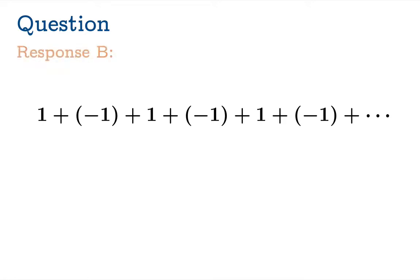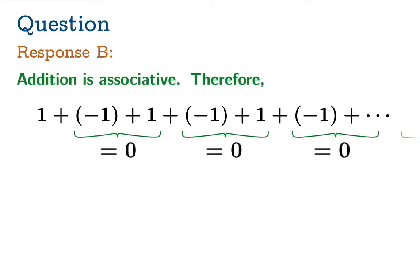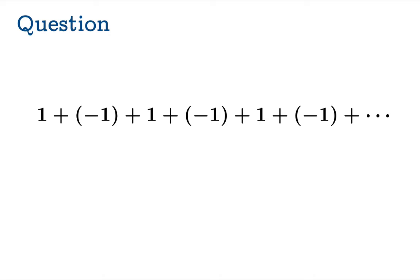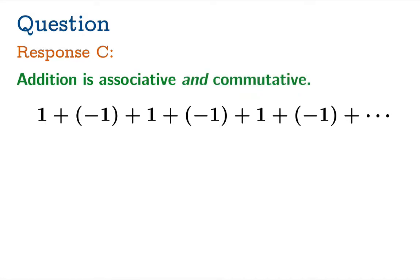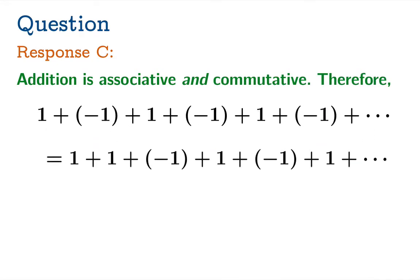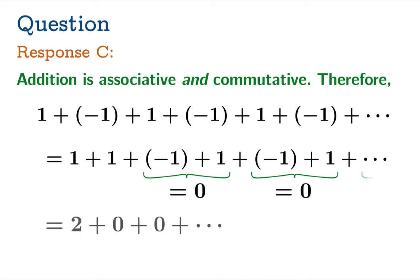But response B starts the same way: yes, addition is associative. By associating these pairs differently, the original series should equal one plus zero plus zero plus zero, etc., which had better equal one. Now, that seems reasonable as well, and obviously this cannot be equal both to zero and one. It gets more interesting: another response says addition is associative and commutative, so we could swap pairs in order, get a new series, associate those pairs, and get two plus zero plus zero, etc. — equal to two.